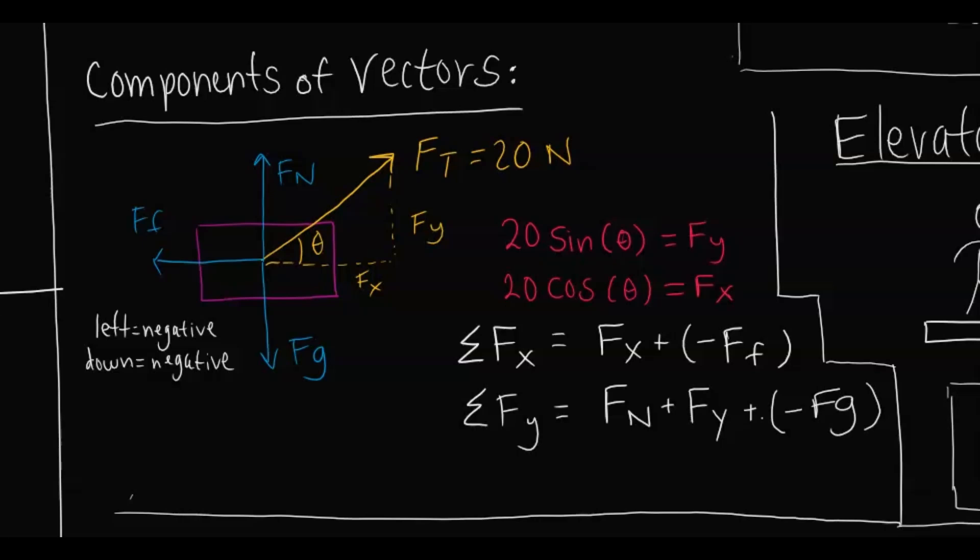The net force in the x-direction is the x-component of the tension force plus the negative force of friction. In the y-direction, it's the force normal acting positively upward, plus the y-component of tension force, plus Fg which is negative because it acts downward — defined as negative.